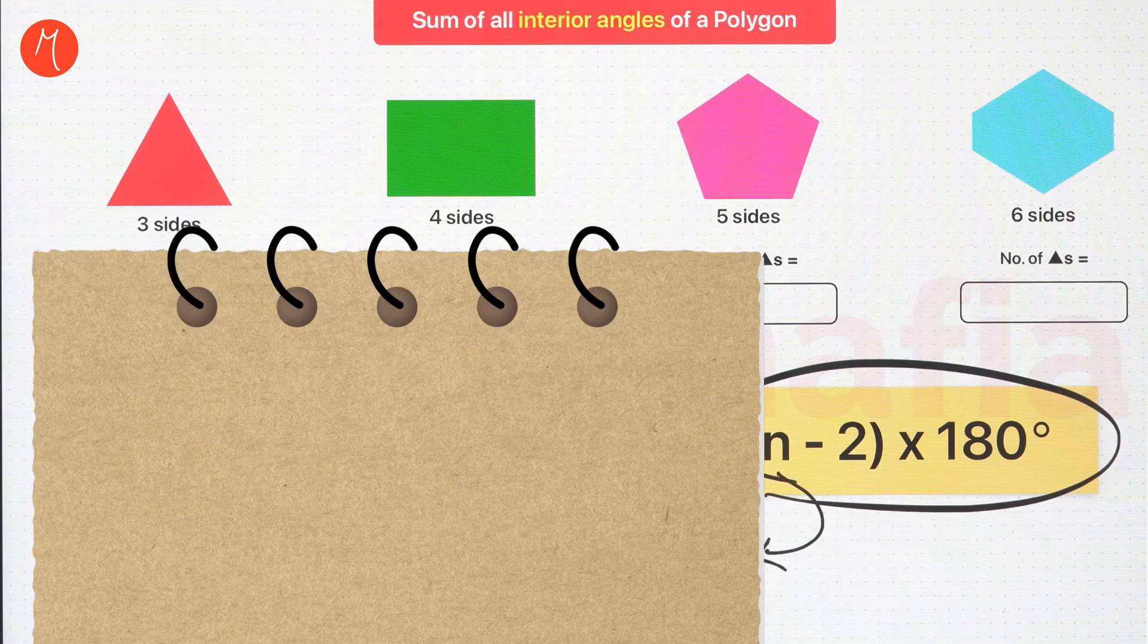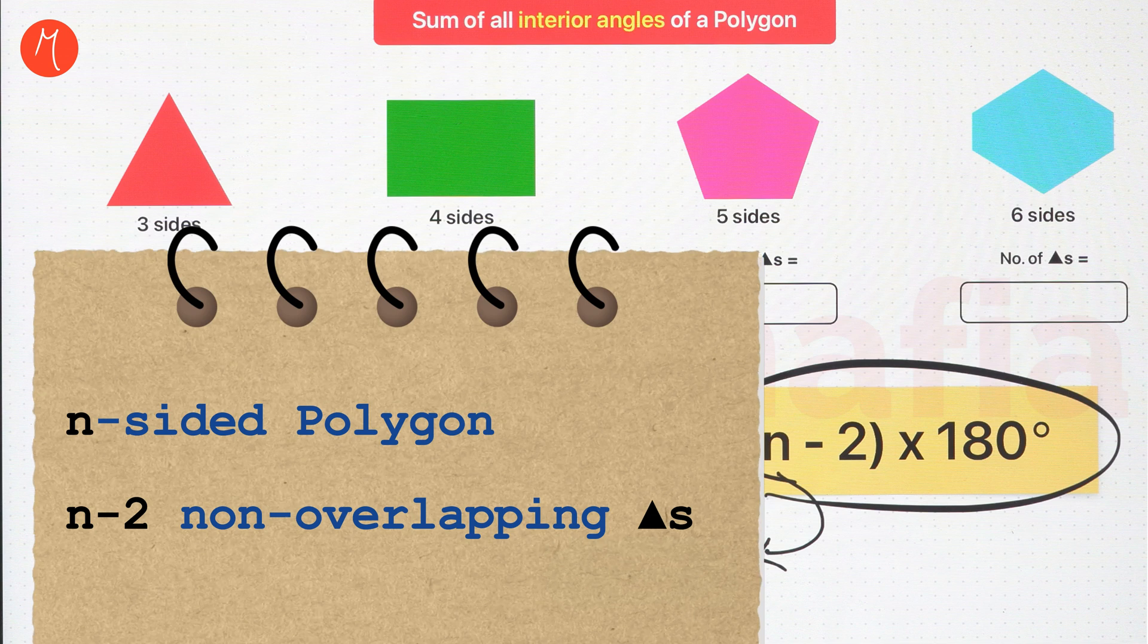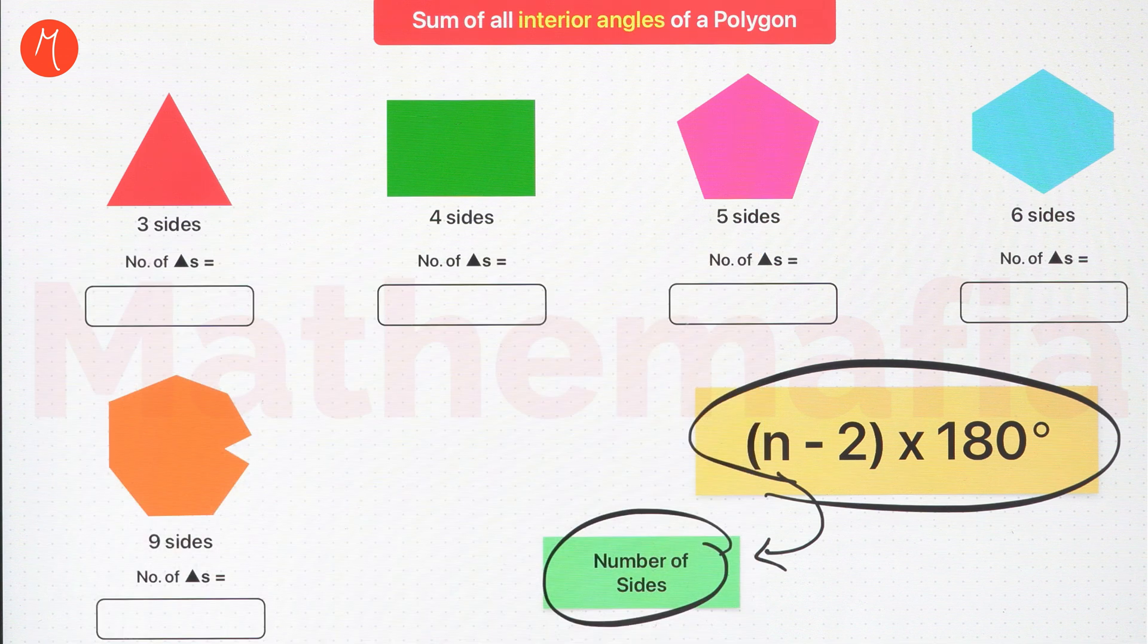You know, in any polygon that has n sides, you can always draw n-2 non-overlapping triangles. Let us see how.